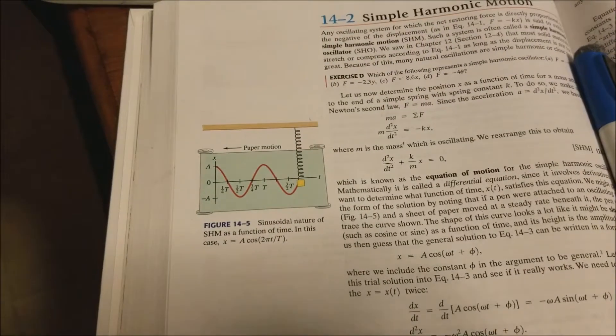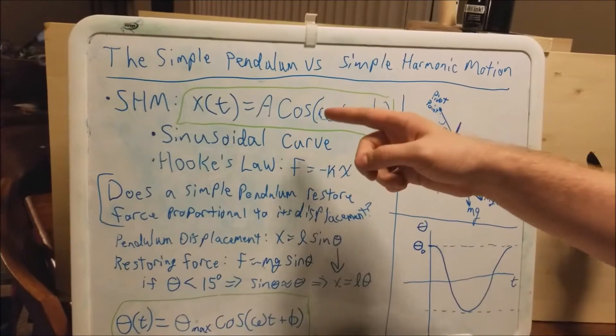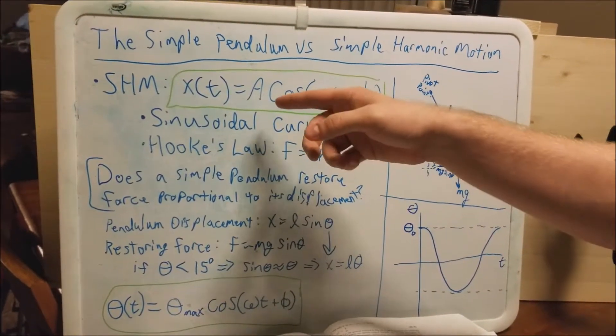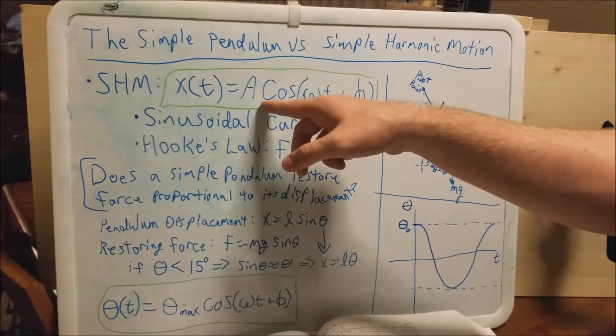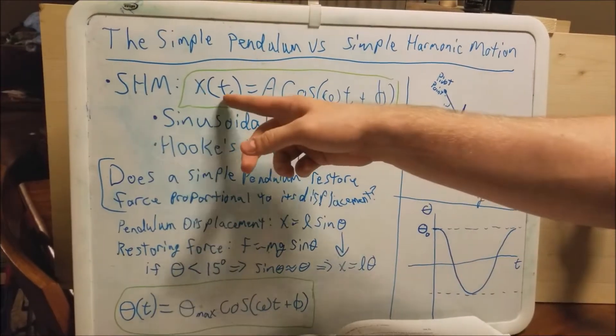So for a spring, simple harmonic motion is found using this equation here, which is its displacement with respect to time.